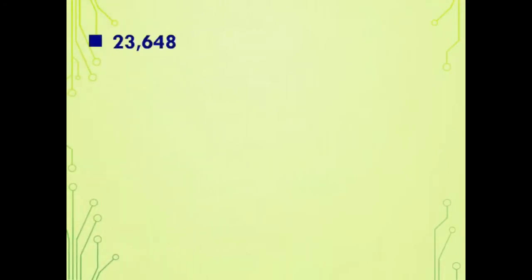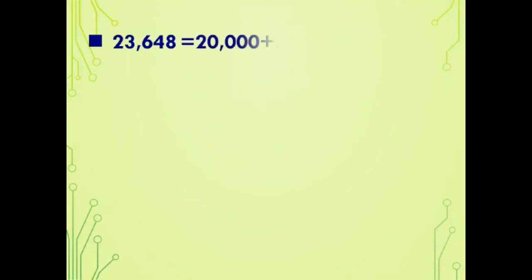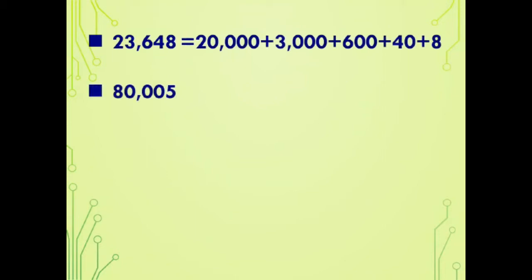Now let us try some more examples. Look at the number 23,648. We write it in expanded notation form as 20,000 + 3,000 + 600 + 40 + 8. Next is a tricky one: 80,005. We write it in expanded notation form as 80,000 + 5.